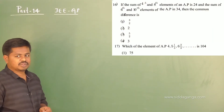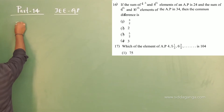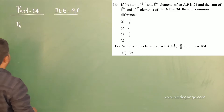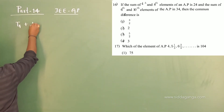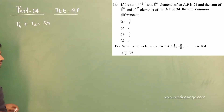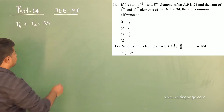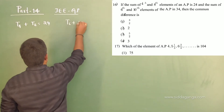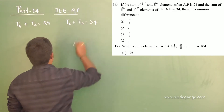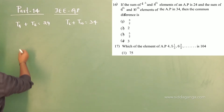Here we have the sum of the 4th and 8th terms of the AP. The 4th term plus the 8th term is equal to 24. The sum of the 6th term and 10th term is equal to 34. Now take these as equations.